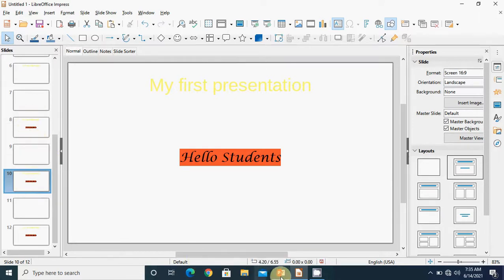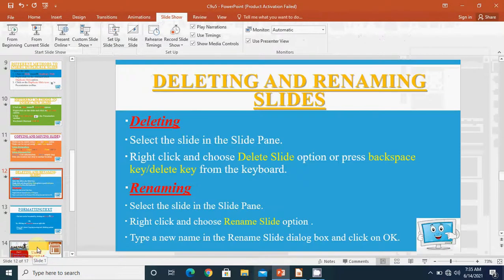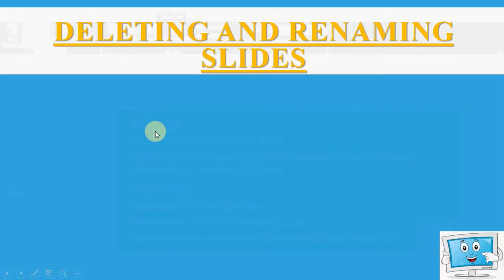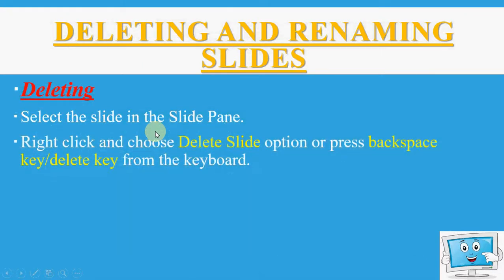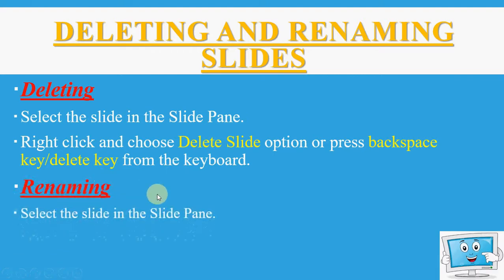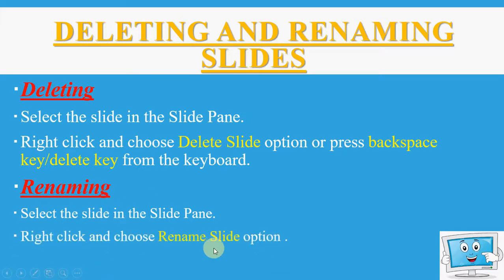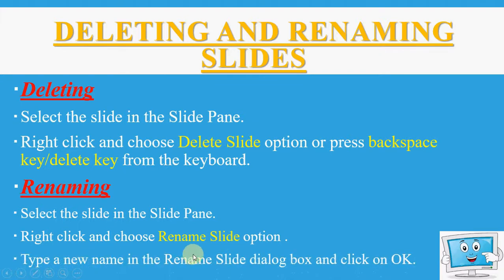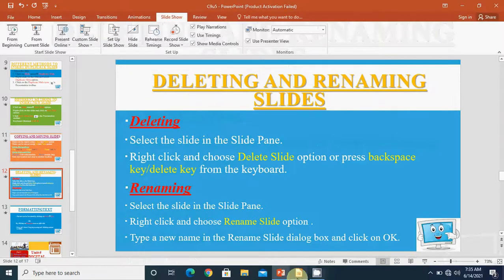After this our next option is deleting and renaming the slide. If we want to delete any slide, select the slide in the slide pane, then right click and choose the delete slide option. Or from the keyboard, we can press the Backspace or Delete key. Next is renaming the slide — to give a new name to a slide, first select the slide in the slide pane, then right click on it and choose the option rename slide.